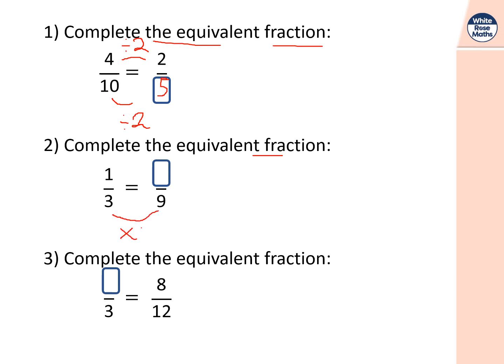Question two: complete the equivalent fraction — one third is how many ninths? Three times three is nine, and on the numerator I'm going to do one times three, which is three. So one third is equivalent to three ninths — they represent the same amount. The word equivalent means exactly the same size or portion.